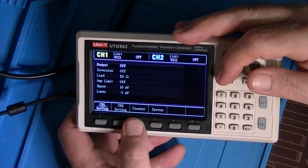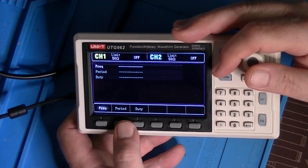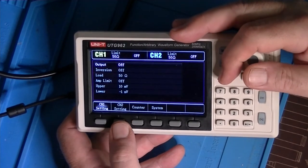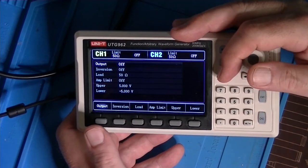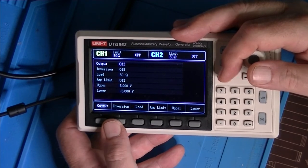So, those are the basic system settings. If we go back to utility, this is the frequency counter function. It will figure out the frequency, the periodicity of it, and the duty cycle. And then, of course, we have all the same settings we can do for channel 2.